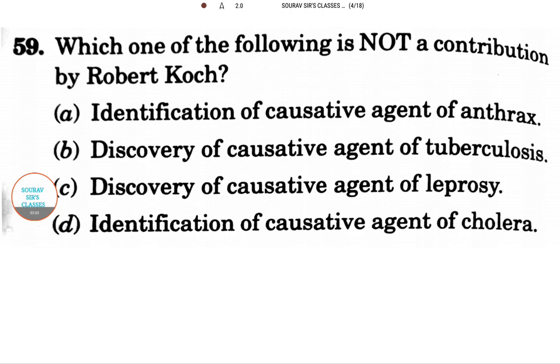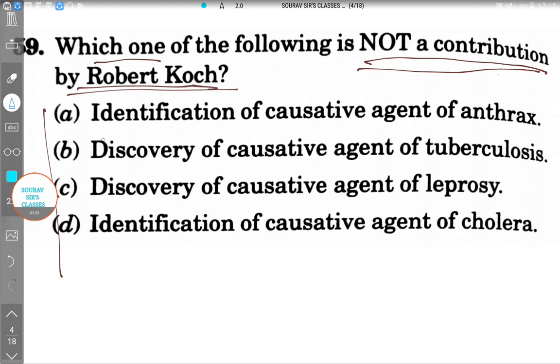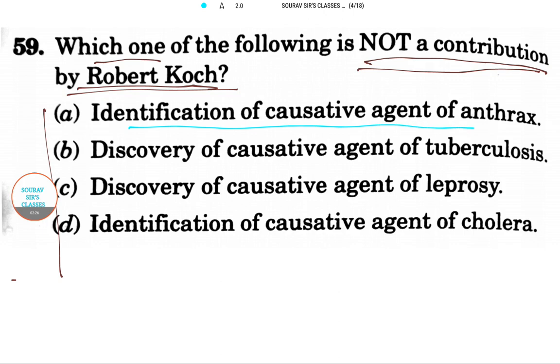Now this is a really interesting question: which one of the following is NOT a contribution of Robert Koch? Let me change my pen color. The first option is identification of the causative agent of anthrax. First, I want to let you know that Robert Koch was a famous microbiologist.